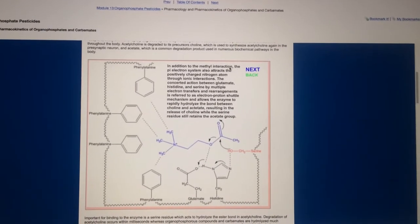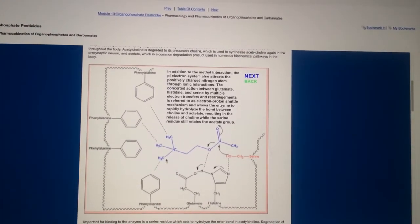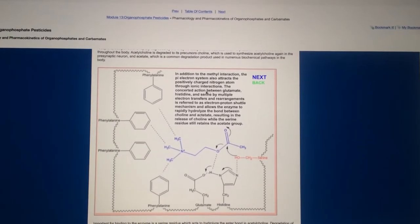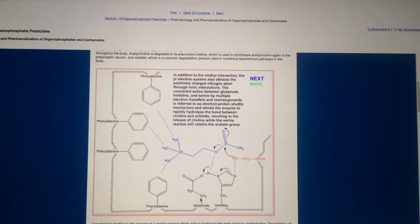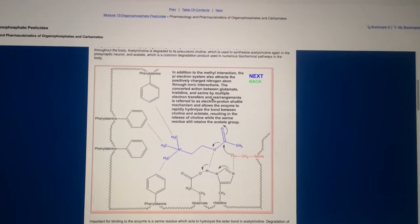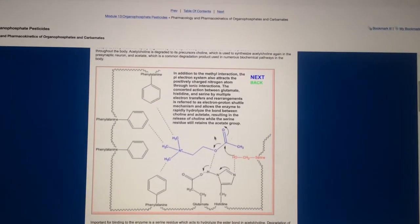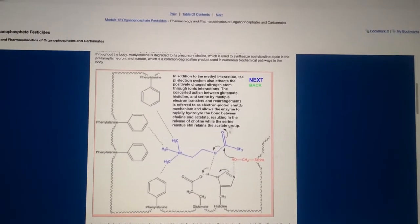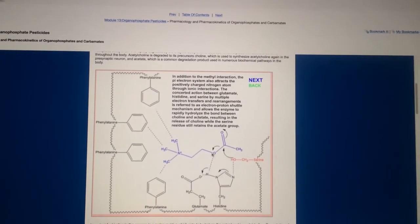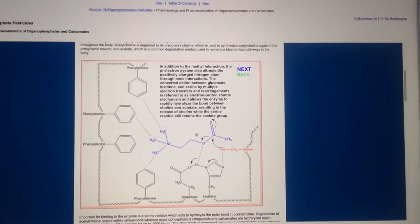In addition to the methyl interactions, they're talking about the interactions here, the pi electrons also attract positively charged nitrogen atom, right here through ionic interactions, these are intermolecular forces. The concerted action between glutamate here, histidine here, and serine by a multiple electron transfer. So you have electrons being transferred all around here, and rearrangements is referred to as the electron-proton shuffle. So you kind of have a little dance going on here, a little electron-proton dance if you want to look at it.